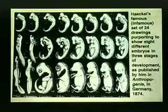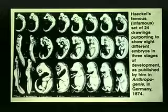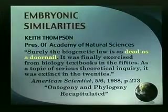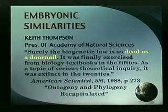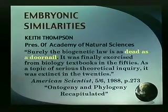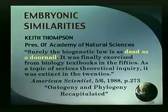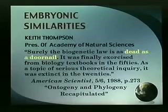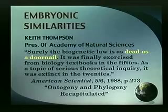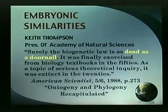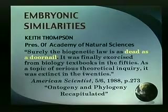That argument was one of the most impressive that Darwin said he saw for his theory, and it's been in textbooks ever since. Though we knew better — Keith Thompson, president of the Academy of Sciences, acknowledged this. The theory is sometimes called ontogeny recapitulates phylogeny. What that means is you started out in one form of the embryo and went through the lizard stage and the chicken stage and on up through other stages. And that kind of argument is used by abortionists to justify killing babies in the lizard stage. Keith Thompson says surely the biogenetic law — ontogeny recapitulates phylogeny — is dead as a doornail. This was back in '88.